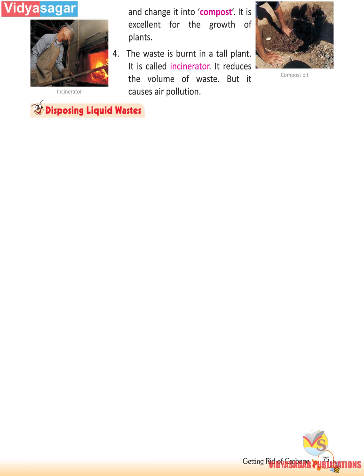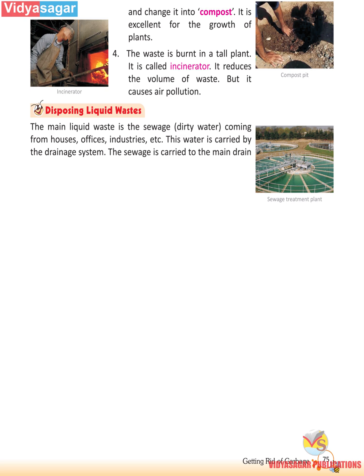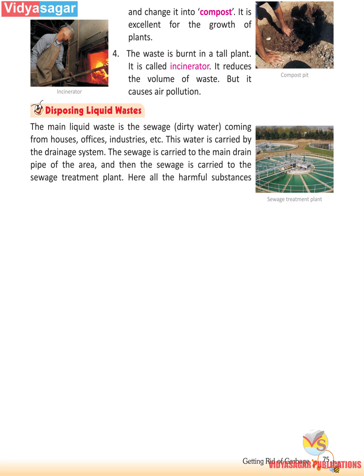The main liquid waste is sewage — dirty water coming from houses, offices, industries, etc. This water is carried by the drainage system. The sewage is carried to the main drain pipe of the area and then to the sewage treatment plant. Here, all the harmful substances from the water are removed, and this cleaned water is carried to the rivers.